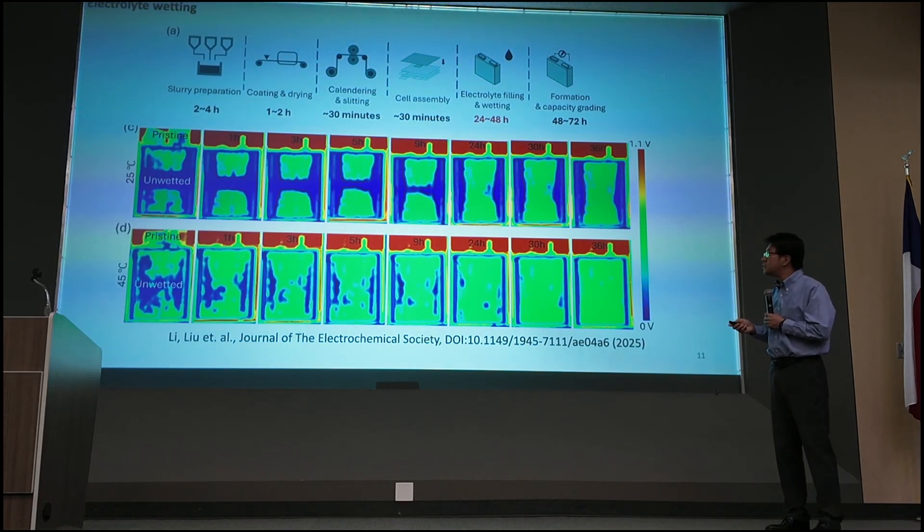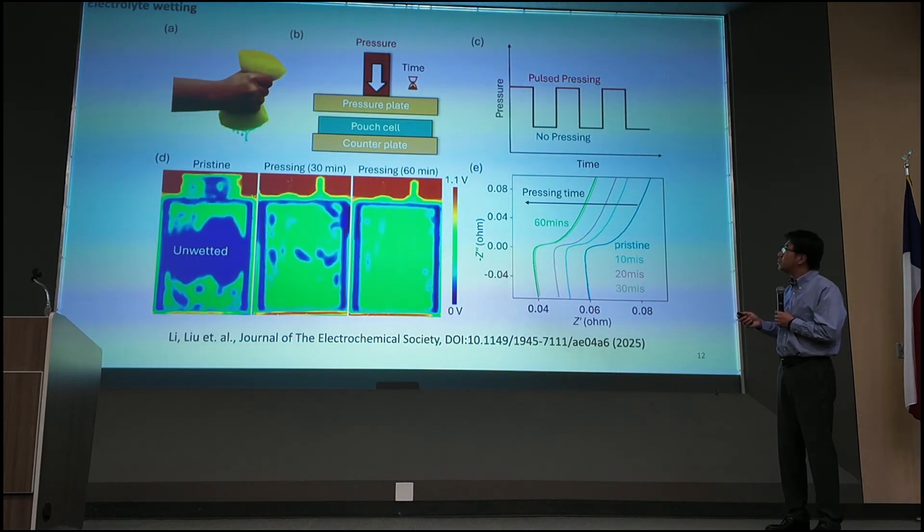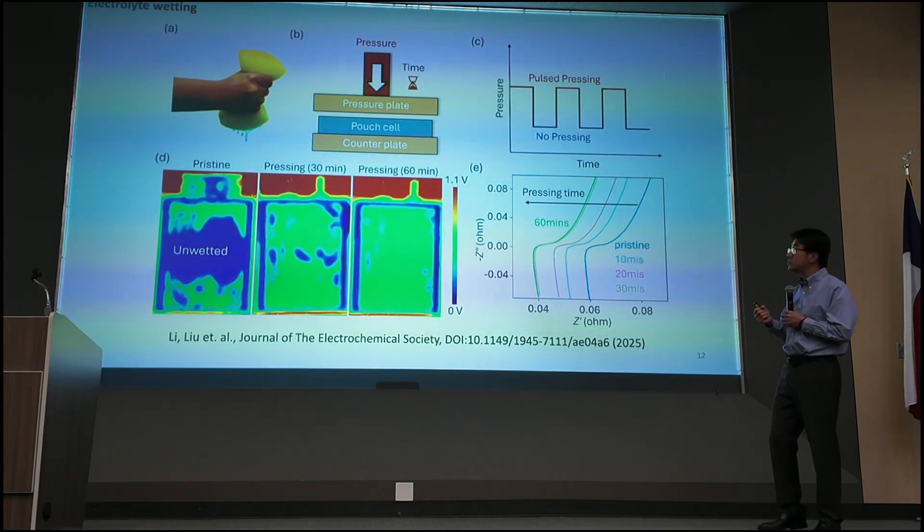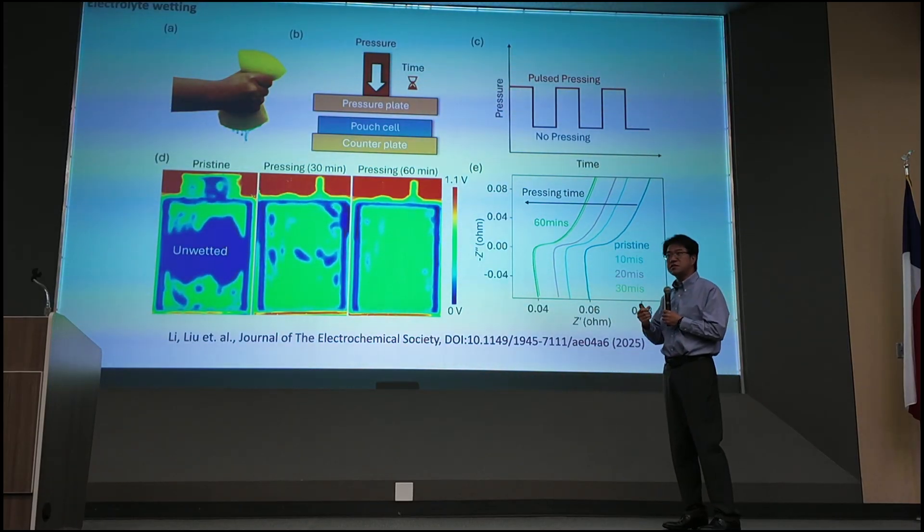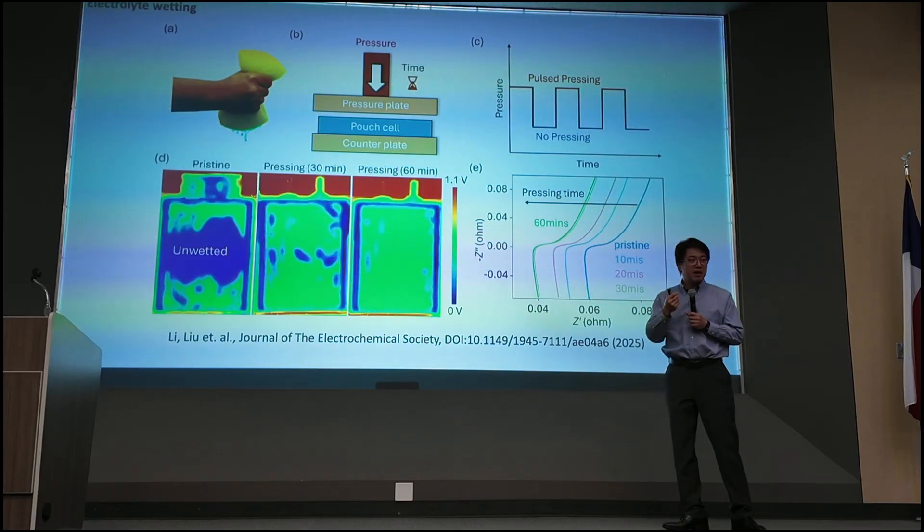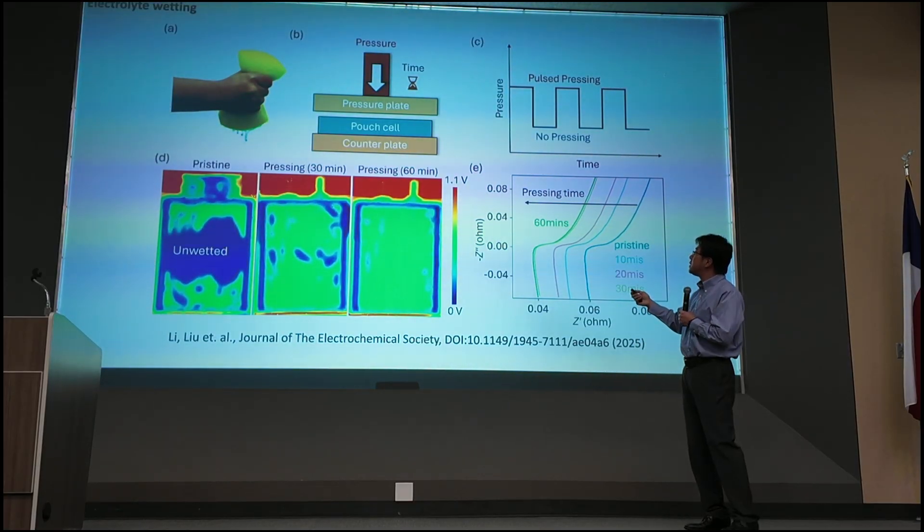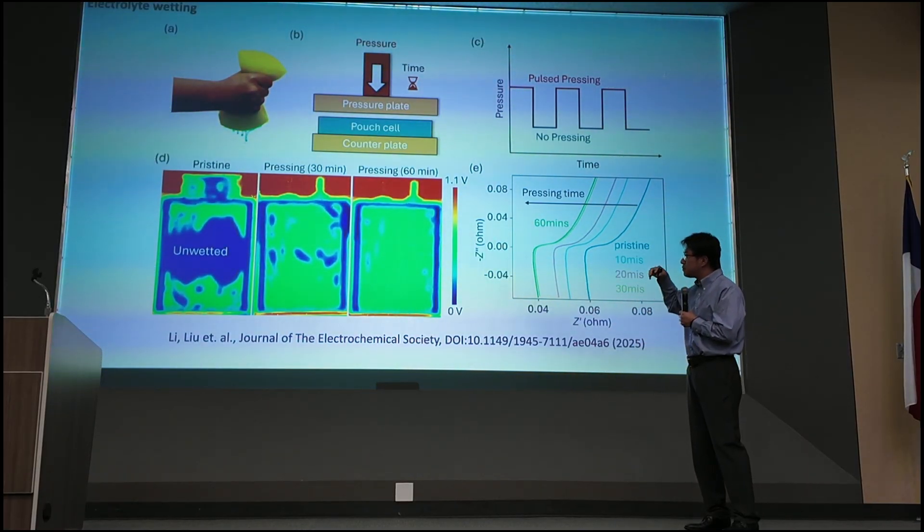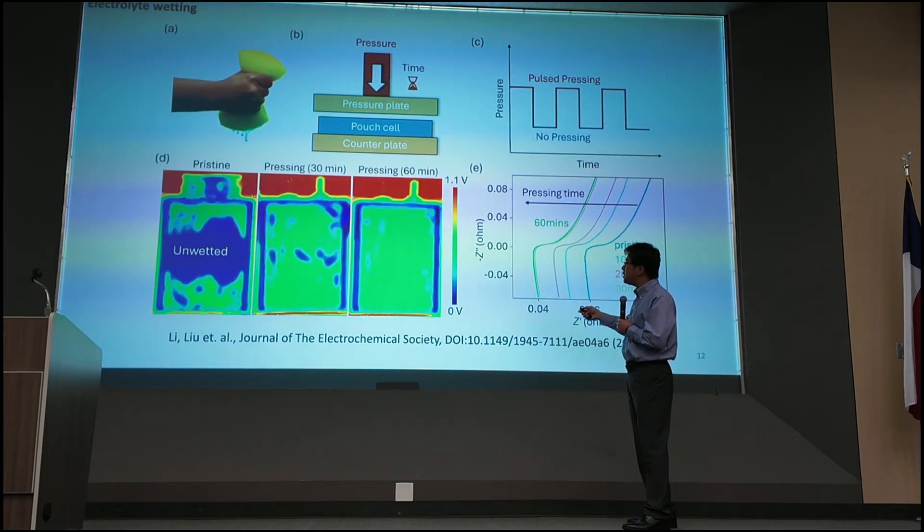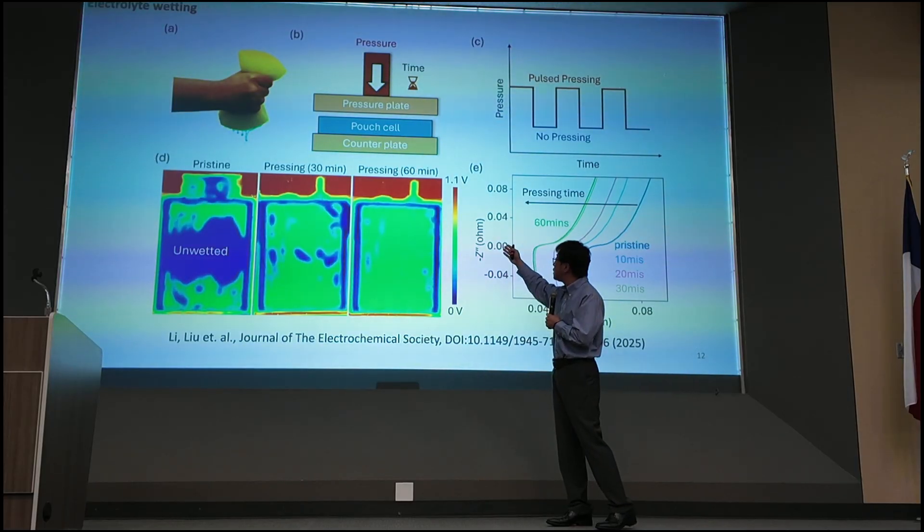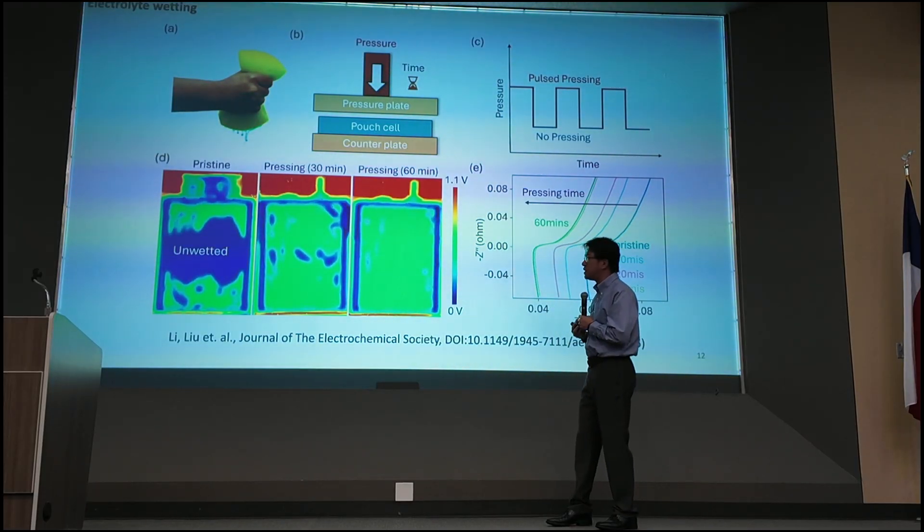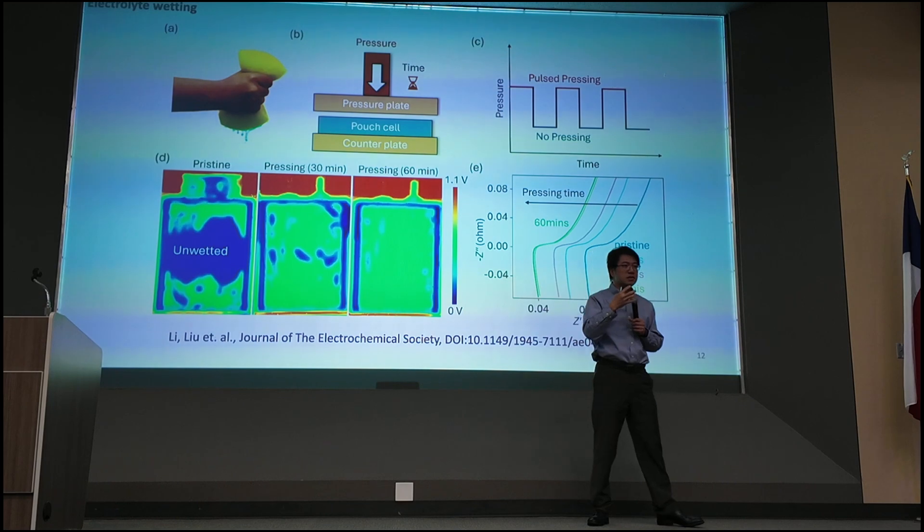So when we show this to my student, he said, wait a minute, this is not right. I wash dishes at home all the time. I never wait for the liquid to soak my sponge. What I do is to squeeze it a few times. It will just wet my sponge instantaneously. So inspired by that, we develop a pressure control system, which presses the cell, releases the pressure, and then we do this iteratively. You can see that the wetting was accomplished in 60 minutes. So that increased the efficiency.